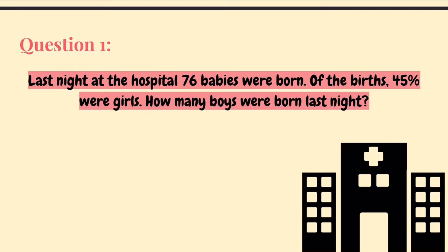If you have any questions or comments, just comment down below. So, first question says: last night at the hospital, 76 babies were born. Of the 76 babies, 45% of them were girls. The question asks how many boys were born last night. We want to know how many boys. In total there are 76. We're dealing with percentage problems, and I have another video regarding percentages — I'll link it down below.